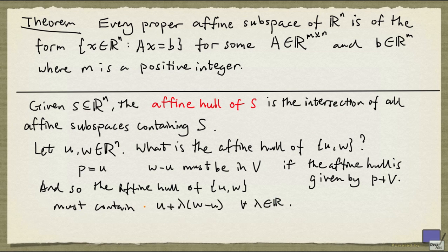That means the affine hull contains the line through U and W. But then the line through U and W is an affine subspace, and it contains both points U and W. So we can conclude that the intersection must be precisely the line through U and W. Therefore, the affine hull of U and W is the line through U and W.